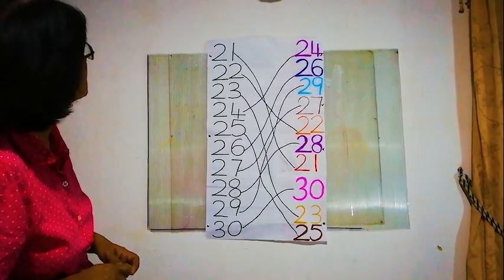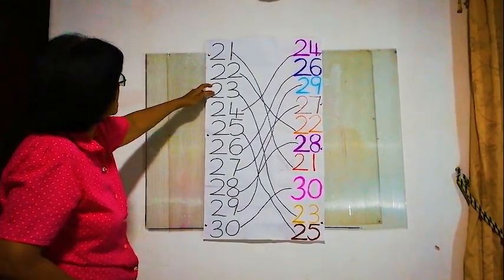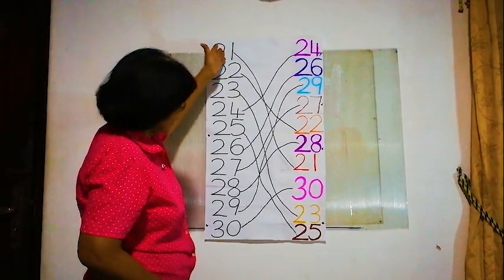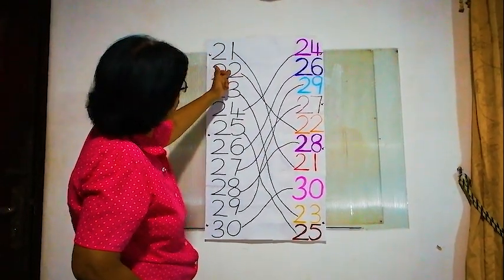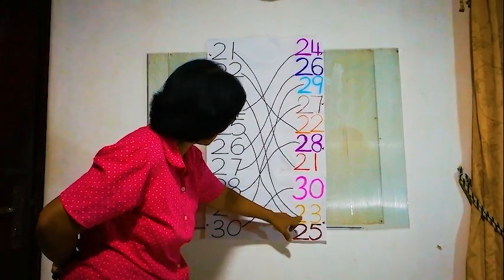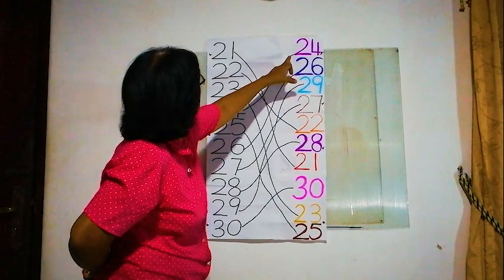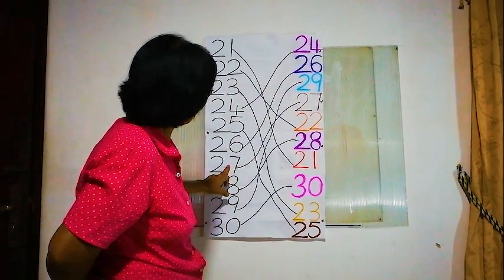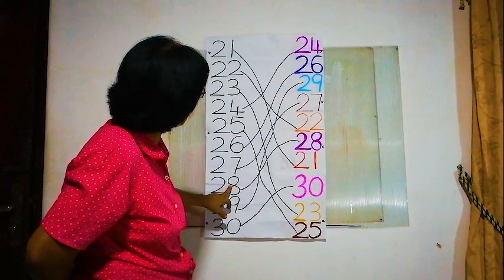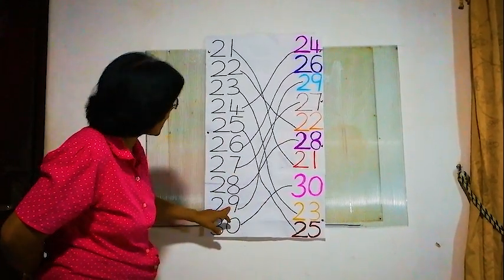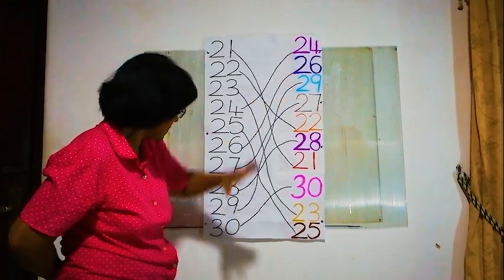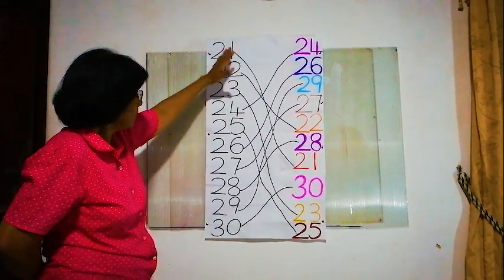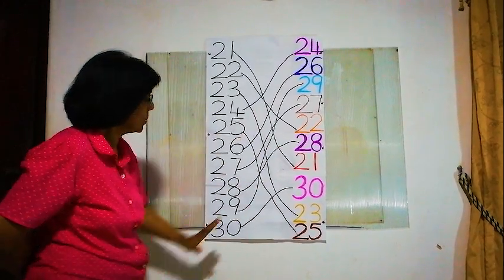Now, is everything correct? Yes! 21, 22, 23, 24, 25, 26, 27, 28, 29, 30 — and here: 21 and 21, 22 and 22, 23 and 23, 24 and 24, 25 and 25, 26 and 26, 27 and 27, 28 and 28, 29 and 29 — this is the last number — 30 and 30. The whole numbers are matched. Finish!